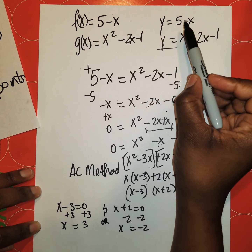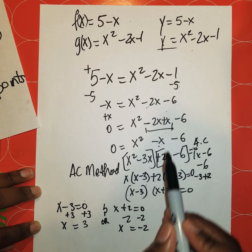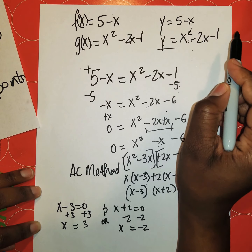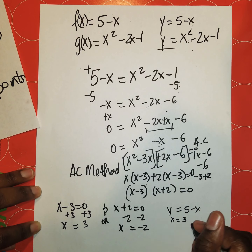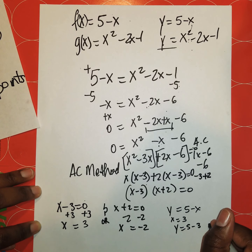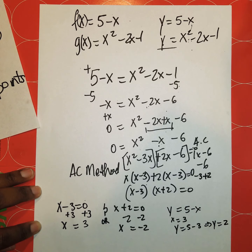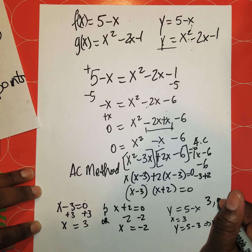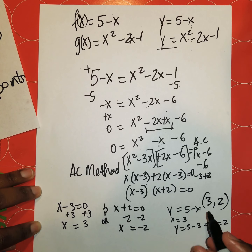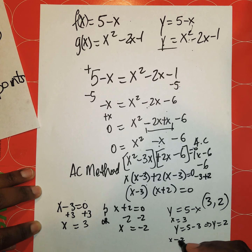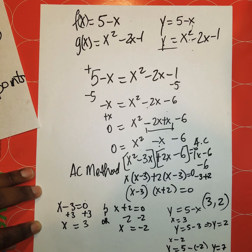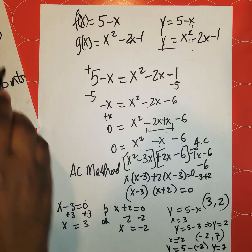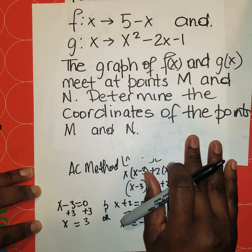To find the y values, substitute each x into the simpler equation y equals 5 minus x. When x equals 3: y equals 5 minus 3, so y equals 2 — giving the point (3, 2). When x equals negative 2: y equals 5 minus negative 2, so y equals 7 (the two negatives give a positive, 5 plus 2 equals 7) — giving the coordinate (negative 2, 7).